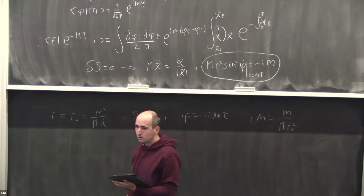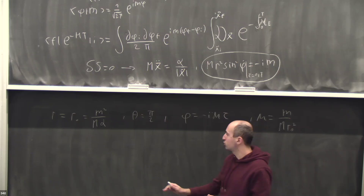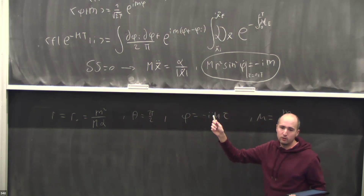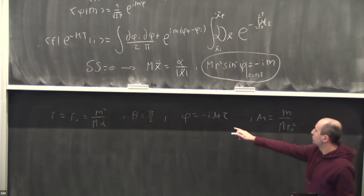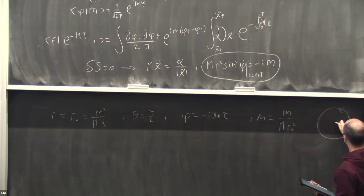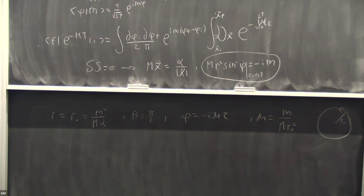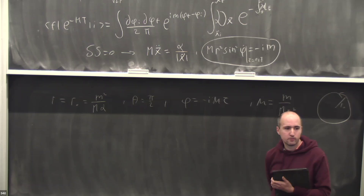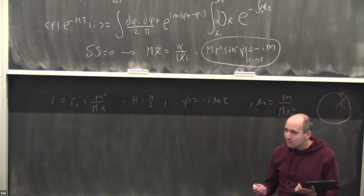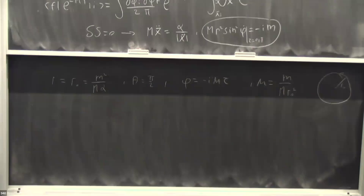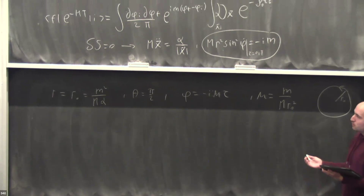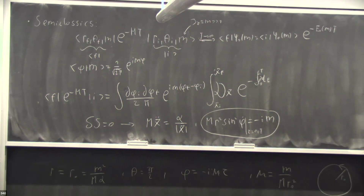The solution to these equations is r equals some constant r_0, and phi equals minus mu tau — the particle rotating. Whatever boundary condition you put on theta, as long as you wait long enough, the solution will converge to this one. Your complete solution is the particle rotating on a circular orbit. At this stage it's completely classical — this is essentially what Bohr and Sommerfeld did in the 1930s, yes.